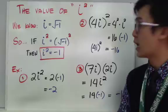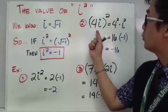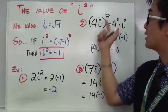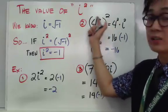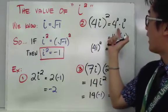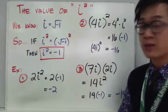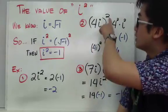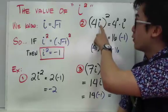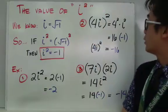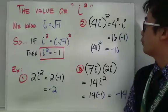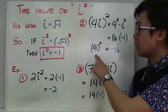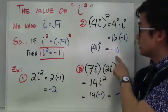This is a common error: students sometimes raise only the i to the second power and forget to square the coefficient. Make sure when dealing with parentheses that you distribute the exponent to both the coefficient and i. So we have 4 squared times i squared, which is 16 times negative 1. Therefore, 4i raised to the second power is simply negative 16.